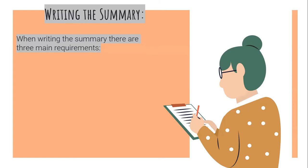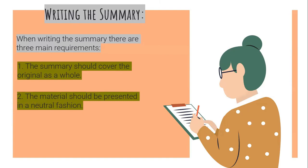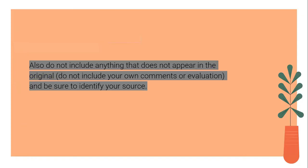Writing the summary. When writing the summary, there are three main requirements. First, the summary should cover the original as a whole — you have to maintain the overall gist of the text. Then, the material should be presented in a neutral fashion: briefly restate the original text and do not add other details that may give meanings different from the original. Then, the summary should be a condensed version of the material presented in your own words — a shortened version of the original text. Also, do not include anything that does not appear in the original, do not include your own comments or evaluation, and be sure to identify your source.